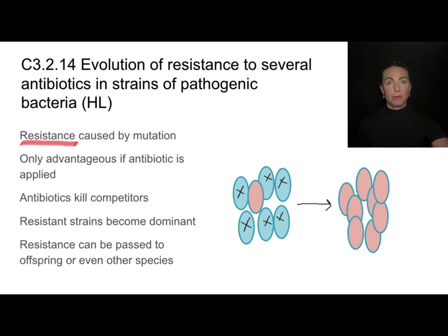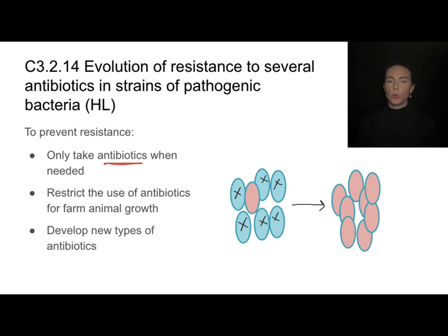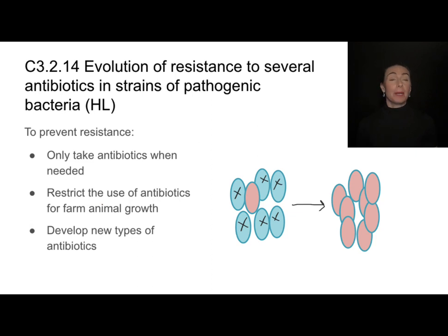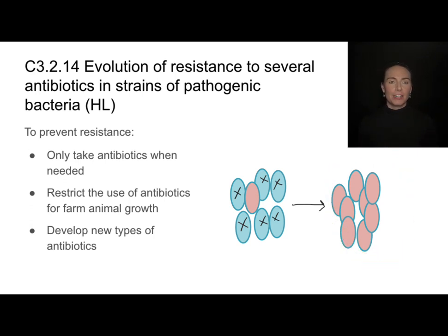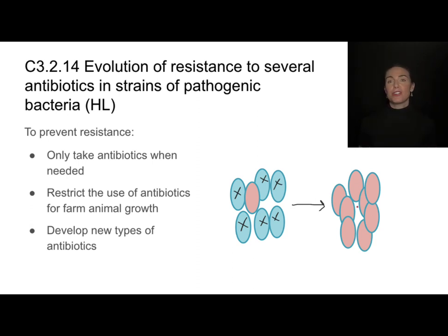A bacteria can take that resistance gene and give it to nearby bacteria of a totally different species, making that species resistant to the antibiotic too. We want to make sure we're only taking antibiotics when absolutely necessary — meaning for a bacterial infection, not viral. We also need to restrict the use of antibiotics for farm animals. Many farm animals are given antibiotics not because they're sick, but because a side effect is that it helps them grow. This unintentionally results in many resistant strains persisting in a population. We also have an obligation as a scientific community to continue developing new types of antibiotics, since in the not-so-distant future, all current antibiotics are likely to face resistant bacterial populations.